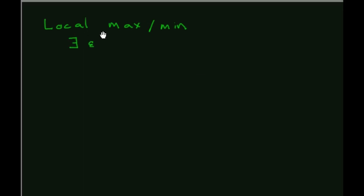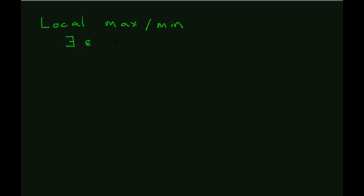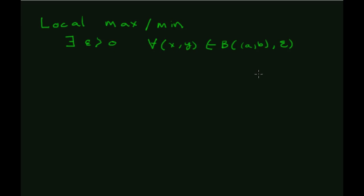We're going to give an epsilon definition. We create an epsilon greater than zero and then an epsilon ball around a point, taking all the points (x, y) that are in that epsilon ball — all points (x, y) around some point (a, b) within epsilon units of (a, b).